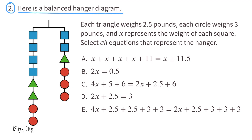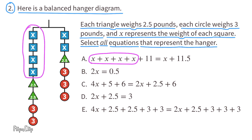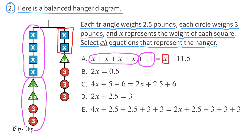Problem number 2. Here is a balanced hanger diagram. Each triangle weighs 2.5 pounds, each circle weighs 3 pounds, and x represents the weight of each square. Select all equations that represent the hanger. The 4x's in the equation are on the left side of the hanger. The 11 is represented by 2 triangles and 2 circles: 2.5 + 2.5 = 5, 3 + 3 = 6, and 5 + 6 = 11. Equation A has only 1x on the right side, but the hanger has 2x's, so Equation A does not match the hanger.